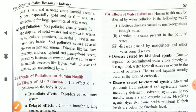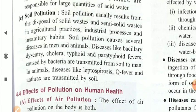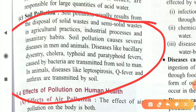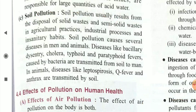Soil pollution usually results from the disposal of solid or semi-solid waste in agriculture practices, industrial processes, and unsanitary habits. Soil pollution causes several diseases in humans and animals. Diseases like bacillary dysentery, cholera, typhoid, and paratyphoid fever, caused by bacteria, are transmitted from soil to humans. In animals, diseases like leptospirosis, Q fever, and anthrax are transmitted by soil.